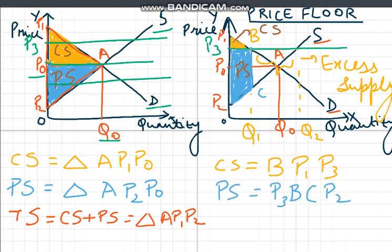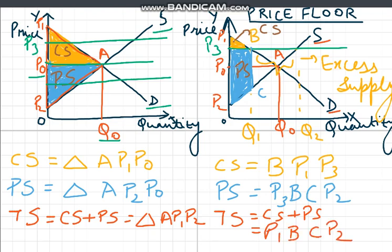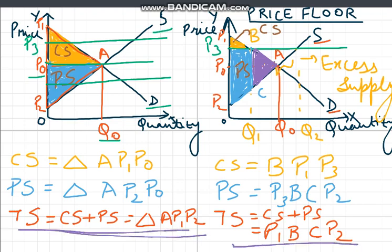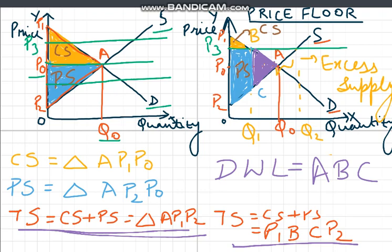Our total surplus is equal to consumer surplus plus producer surplus, which is equivalent to the region P1, B, C, P2. Now, comparing our total surplus in the left-hand side panel and right-hand side panel, we can figure out that the triangle A, B, C is our deadweight loss. Because our total surplus without any externality is greater than our total surplus with externality. Therefore, triangle A, B, C — the purple shaded triangular region — is our deadweight loss. That is, the loss in our total surplus due to the externality is this triangular region A, B, C.